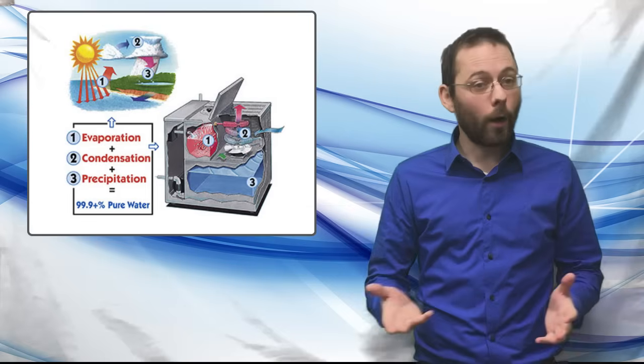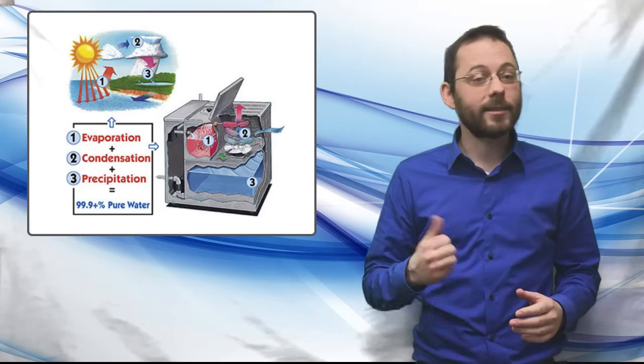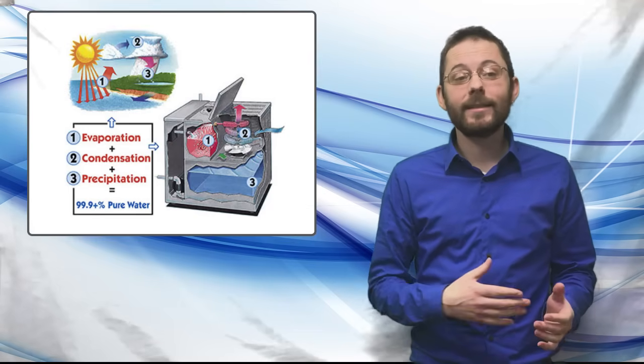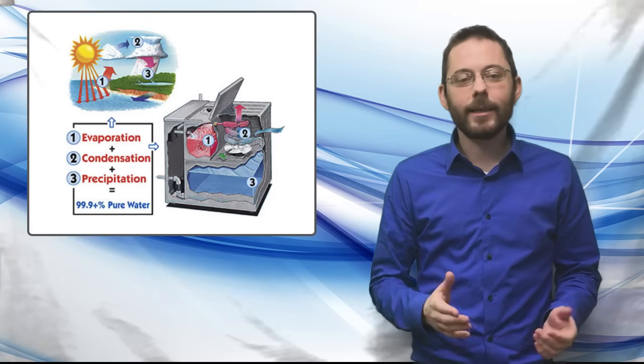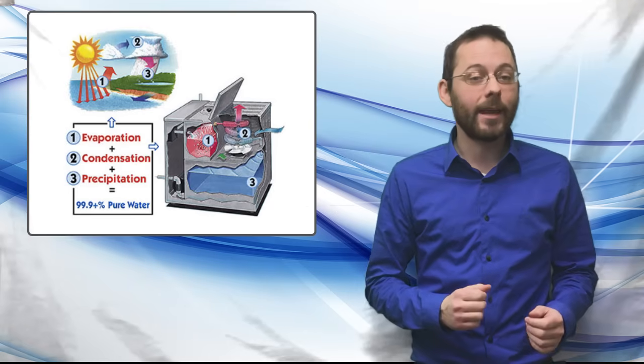Water distillers boil water causing evaporation to take place in a similar way to how the sun heats up oceans or lakes which produces evaporation. Then the water condenses into a steam tube like clouds forming in the sky and lastly it drips pure water into a glass jar or stainless steel storage tank like rain falling.